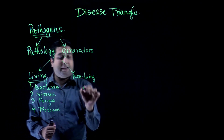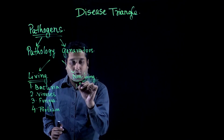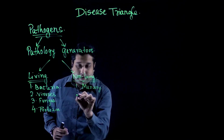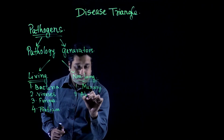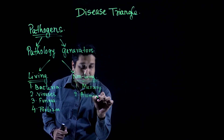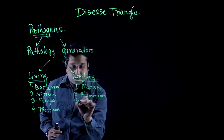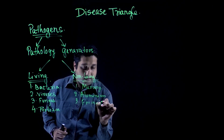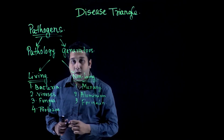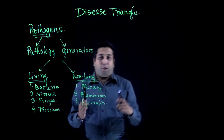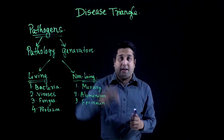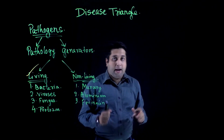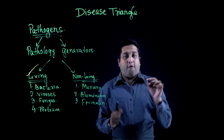On the other hand, non-living components include components like mercury, aluminum, formalin, etc. While understanding the disease triangle concept, we will consider the living pathogens only.